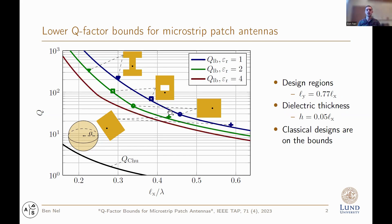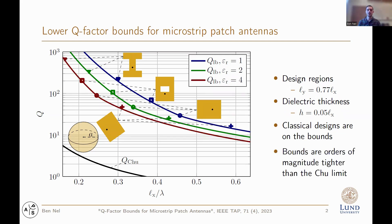When we take a look at the relative permittivity of four for the substrate, we again see the same. It should be noted that for all of these cases, the bounds are orders of magnitude tighter than the Chu limit.